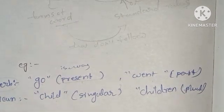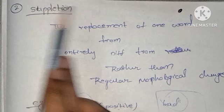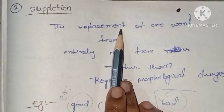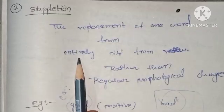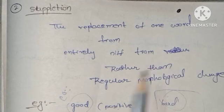The second type is supplation - the replacement of one word from an entirely different form rather than regular morphological change.